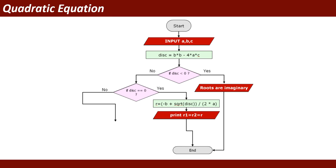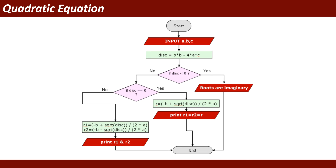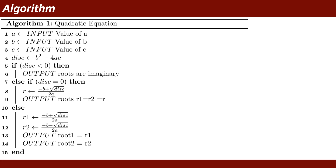In the case where disk equals 0, root 1 equals root 2, and both roots have the same value r. In the case where disk is greater than 0, it calculates r1 = minus B plus square root of disk divided by 2A, and r2 = minus B minus square root of disk divided by 2A, then displays root 1 and root 2. This is the flowchart of the quadratic equation.